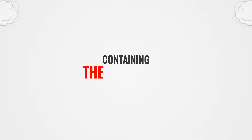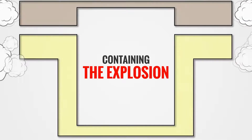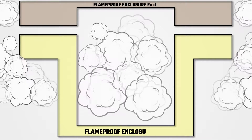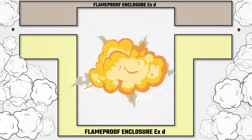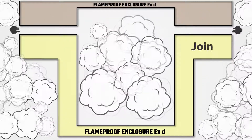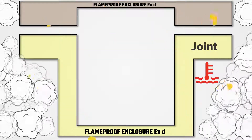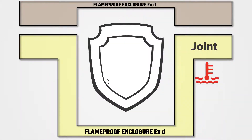The first method involves containing the explosion, should there be one. In this method, a strong, sealed explosion-proof or flame-proof enclosure prevents an explosion from spreading to the exterior of the electrical device and the atmosphere surrounding its enclosure. The temperature of the external surface of the explosion-proof enclosure must not be high enough to ignite a surrounding flammable atmosphere. This approach is referred to as containment, and its protection technique is explosion-proof.